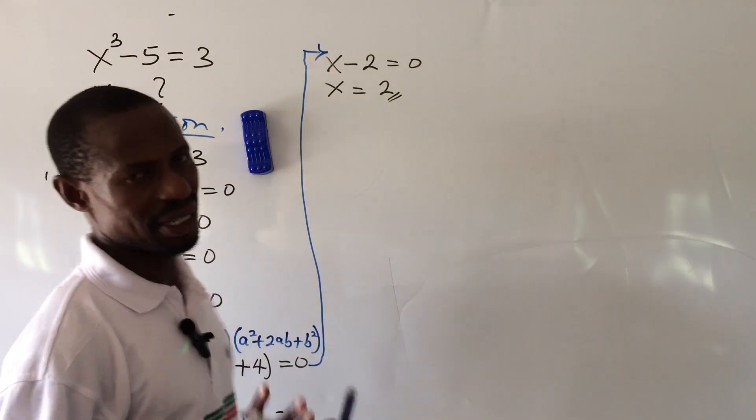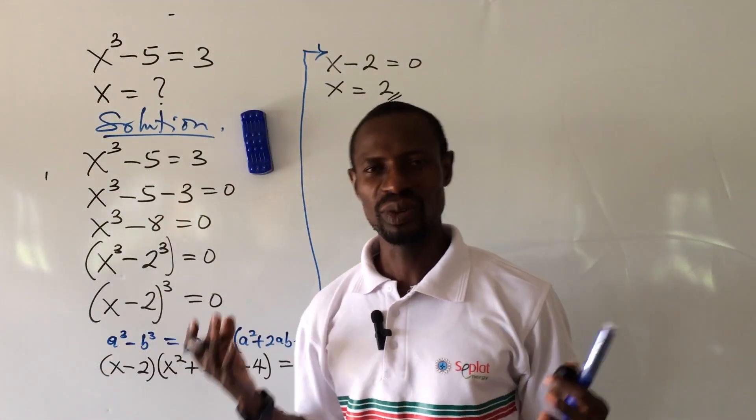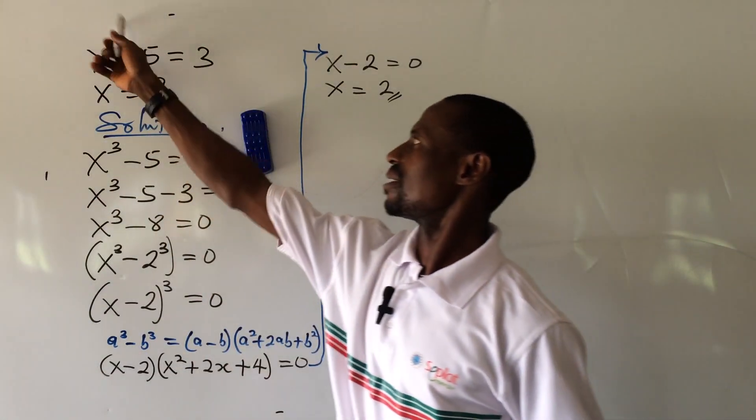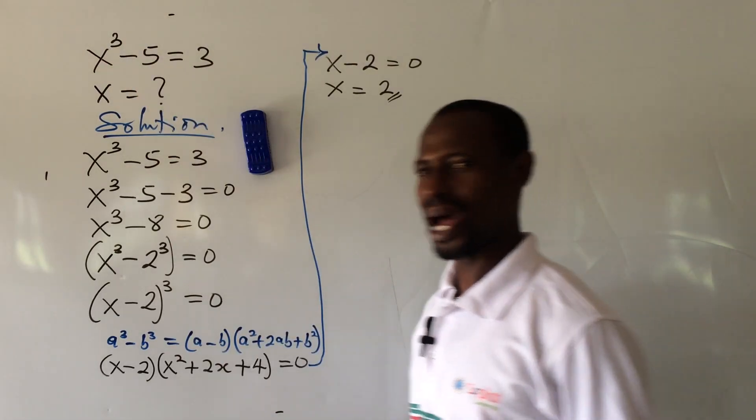Now we have x minus 2 equal to zero, and therefore x equal to 2. We've gotten one of the values for x, and mind you, we're looking for three values for x because this is raised to power 3.